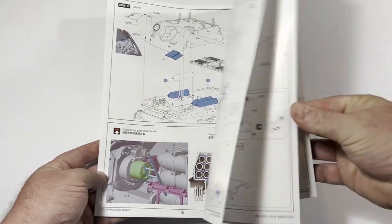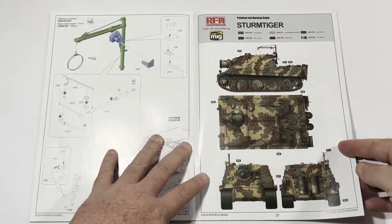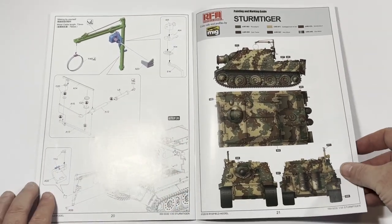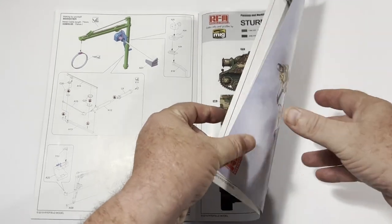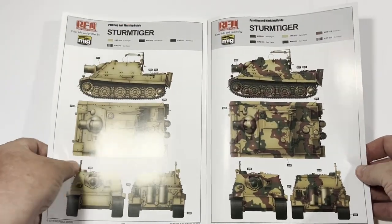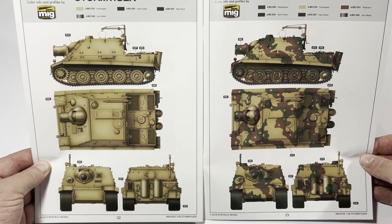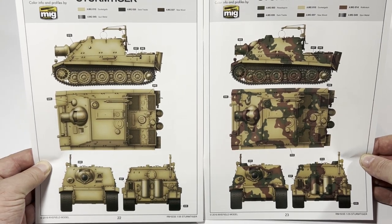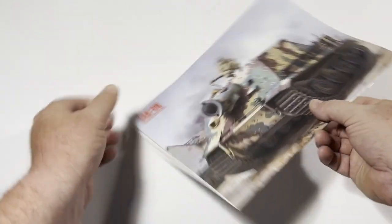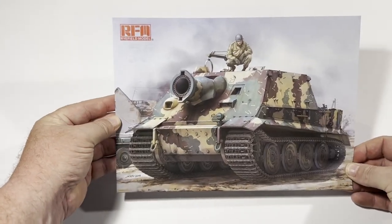The painting guide has three color schemes starting with an ambush pattern, a Dunkel Gelb color scheme, and finally the expected three-tone late war pattern. Support from AMMO by Mig provides specific color references. And finally we get to the rear cover which has a high quality digital print of the box art. You might like to have it framed and hung on your hobby wall or not.